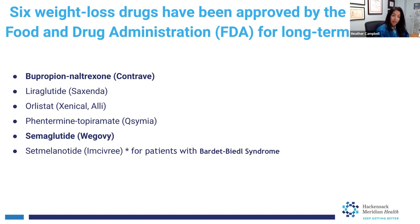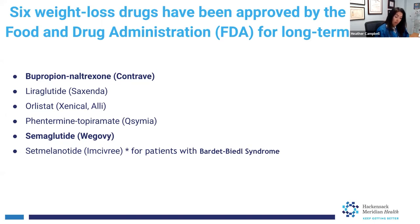The next oral medication, Phentermine, has been around for a long time. Phentermine is a CNS stimulator — it stimulates the central nervous system and suppresses your appetite, so it's an appetite suppressant taken orally. Phentermine can cause high blood pressure as it does stimulate the central nervous system, but it does decrease appetite.